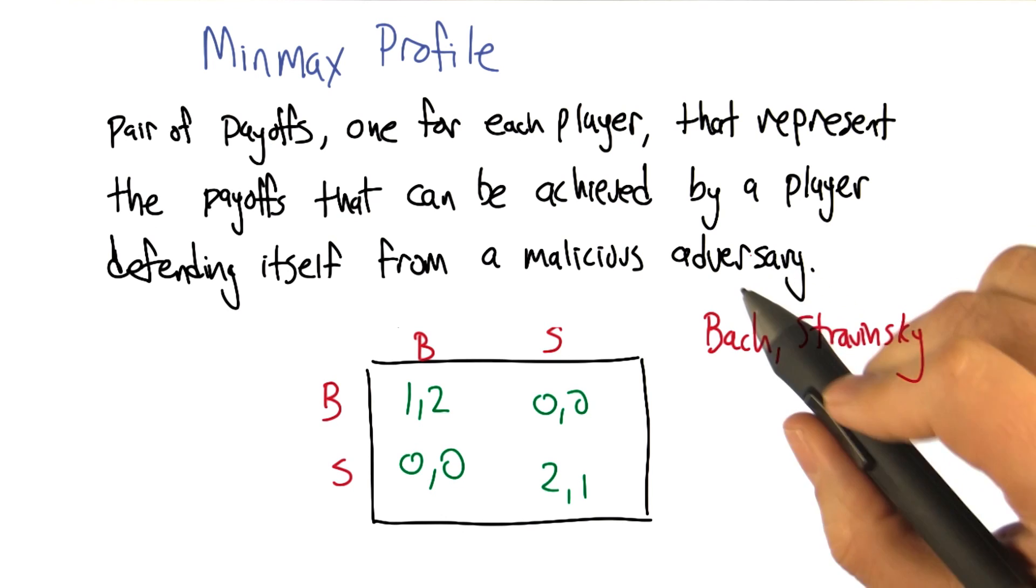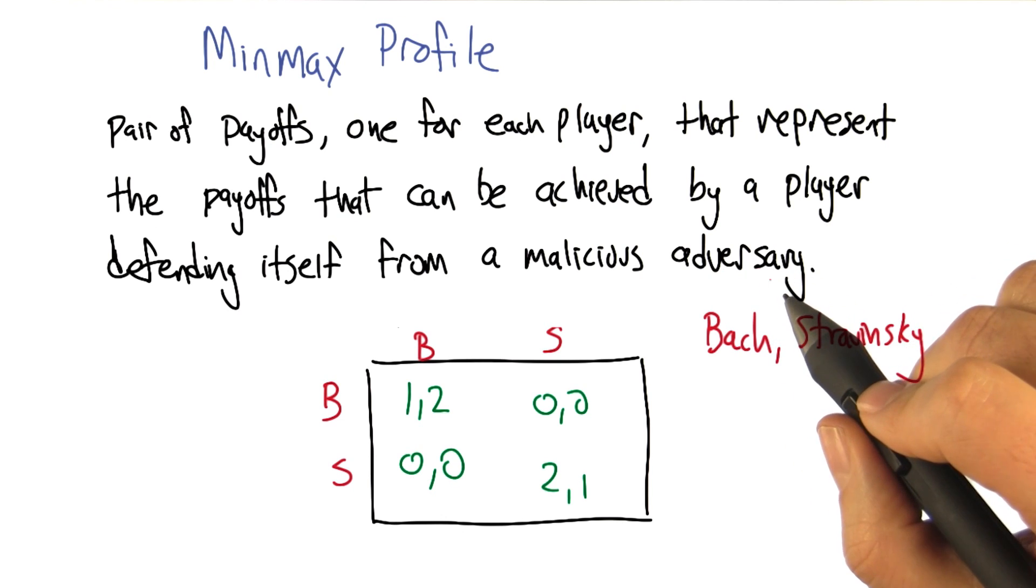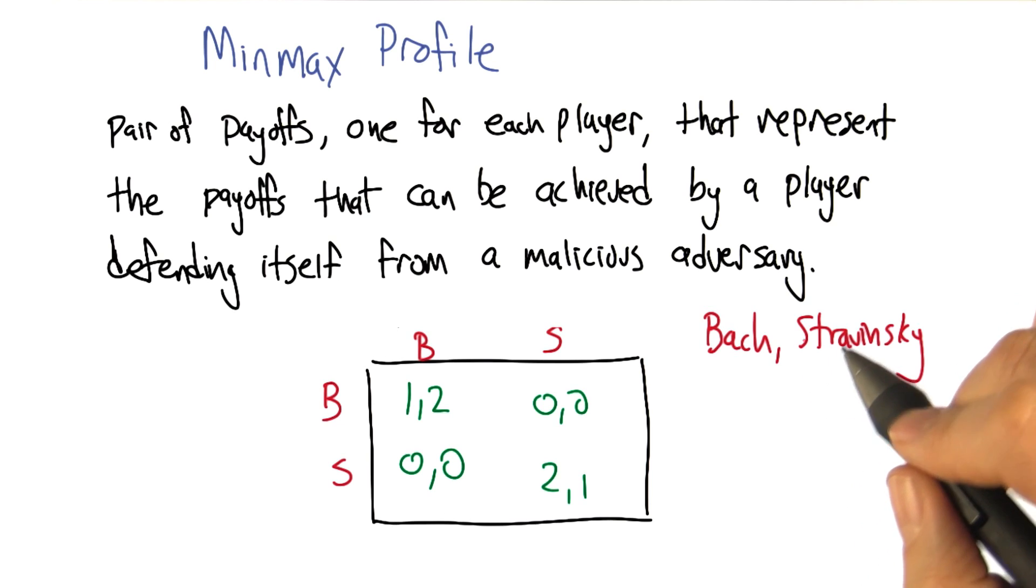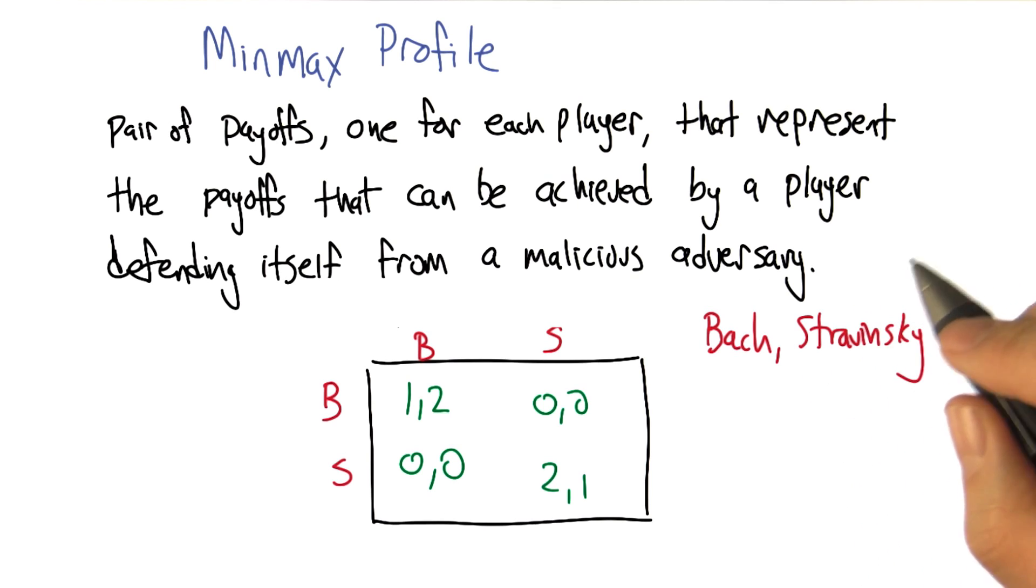So what do you suppose a malicious adversary would mean in a game theory context? Someone who's desperately trying to hurt you. And what does hurt mean? Gets you the lowest score. Yeah. And what does that remind you of from your lesson?